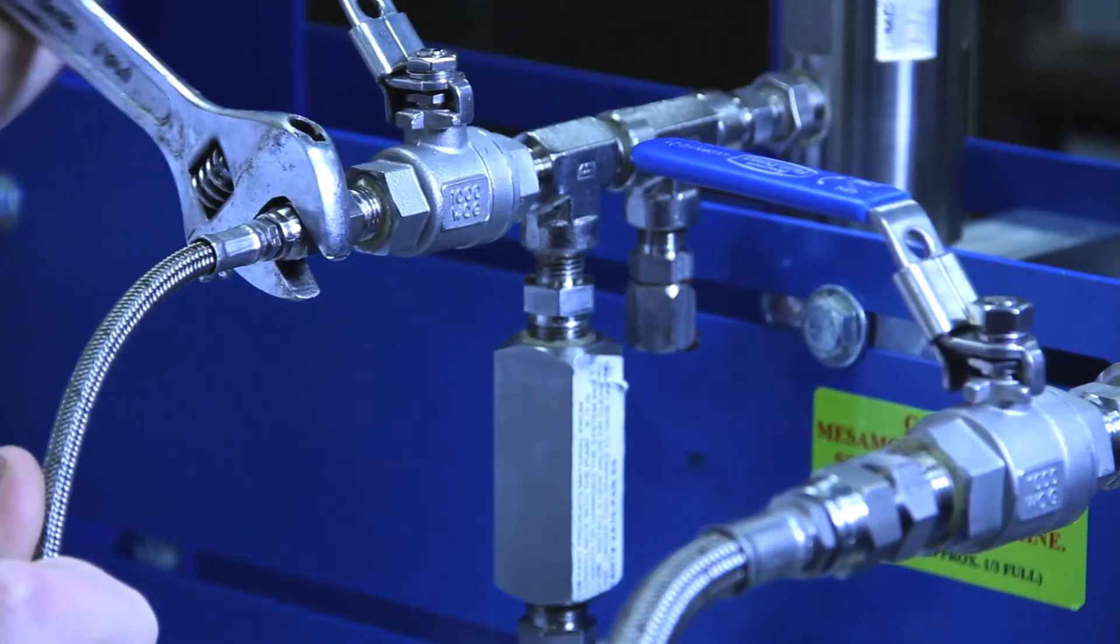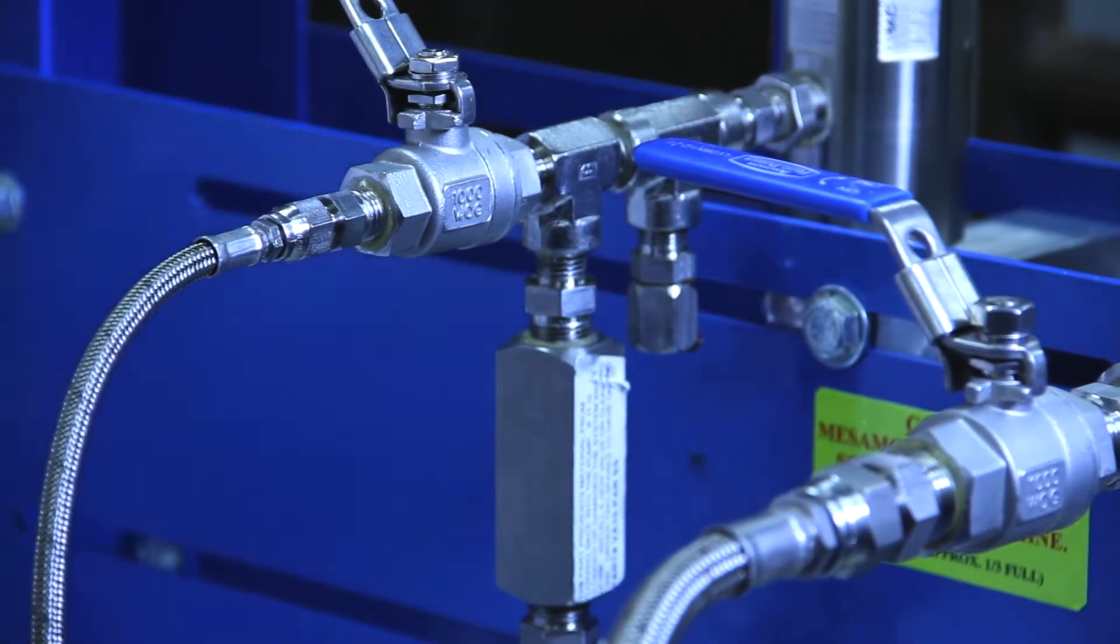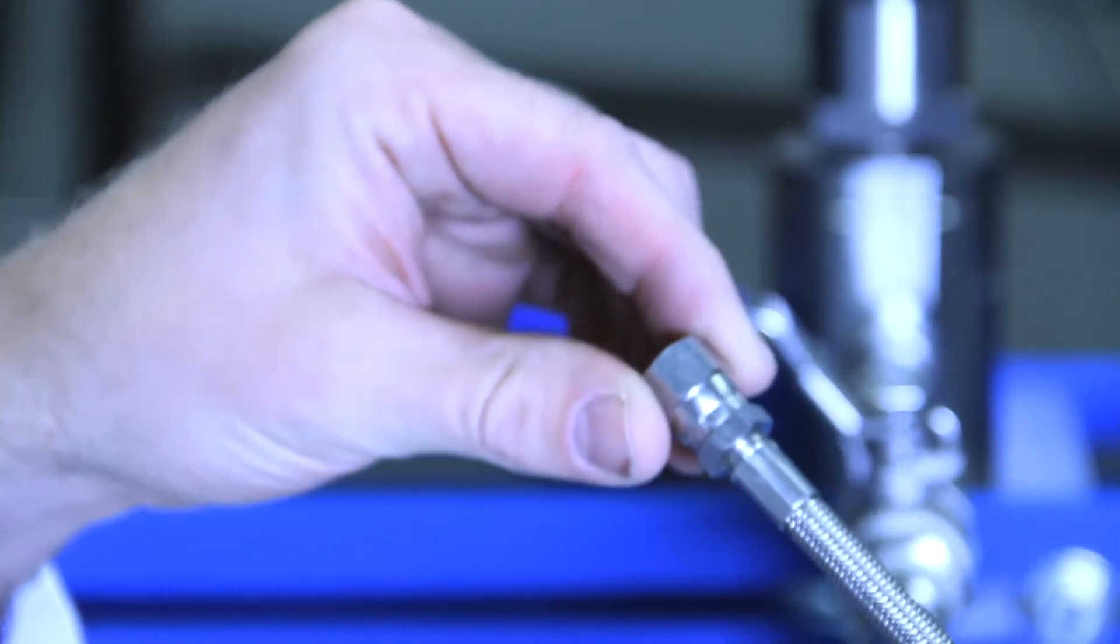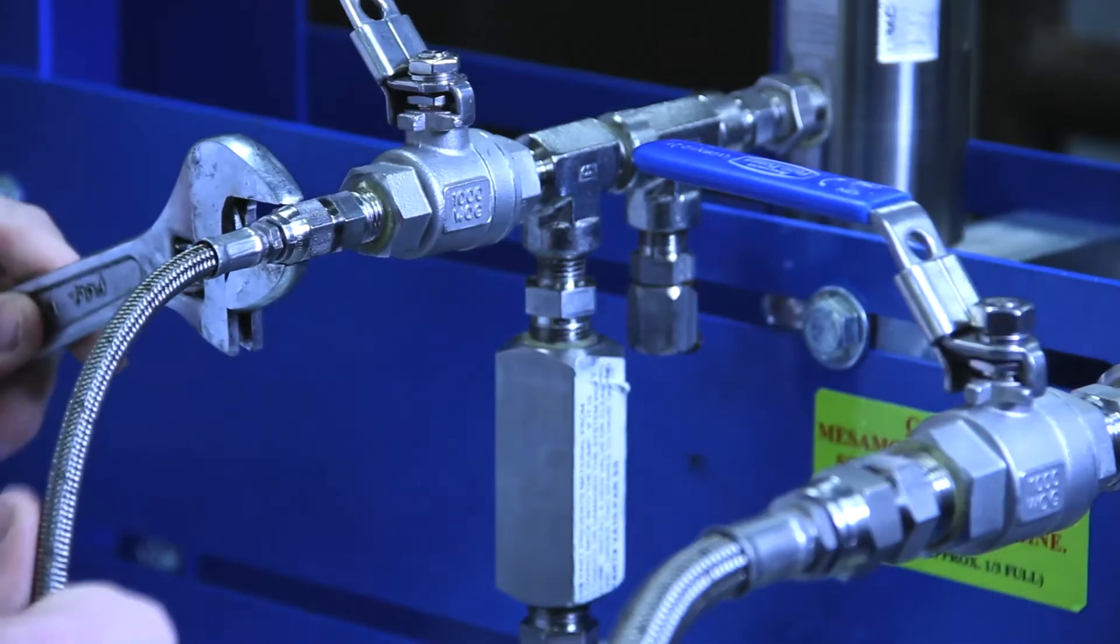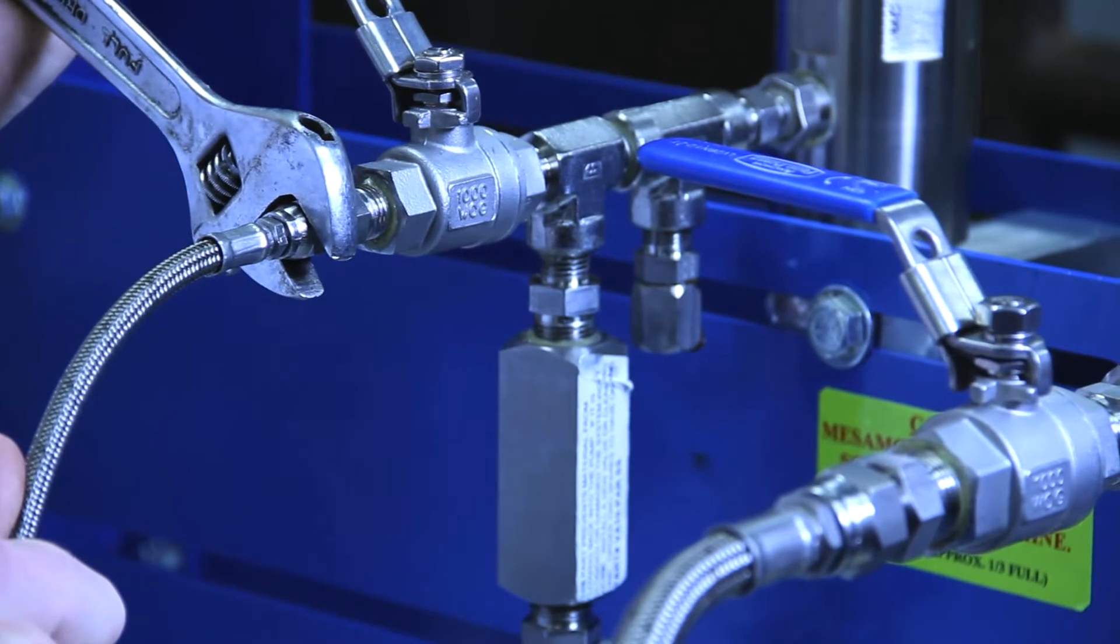Next, you should connect the hardener hose to the discharge port on the pump closest to the pivot point on the machine. This hose is a 1/4 inch Teflon stainless steel braided hose with swivel ends. Using a box end wrench, tighten the hose connection until snug. Do not over-tighten.